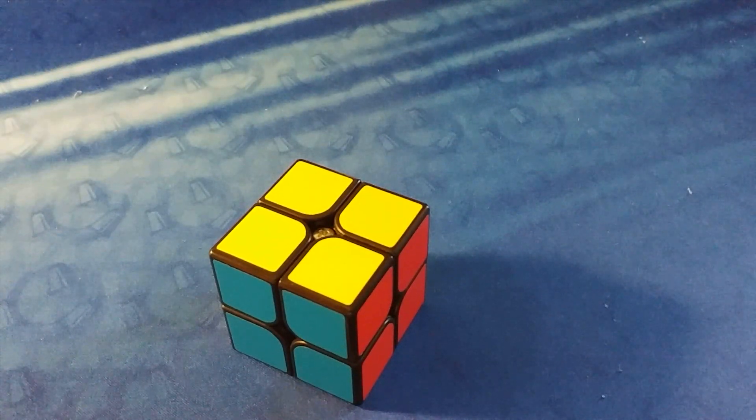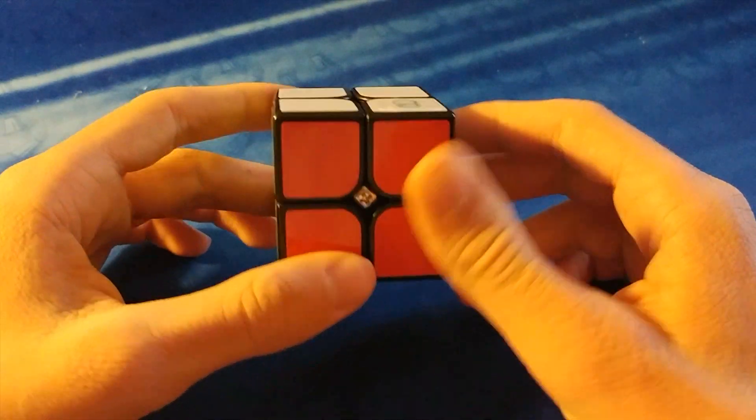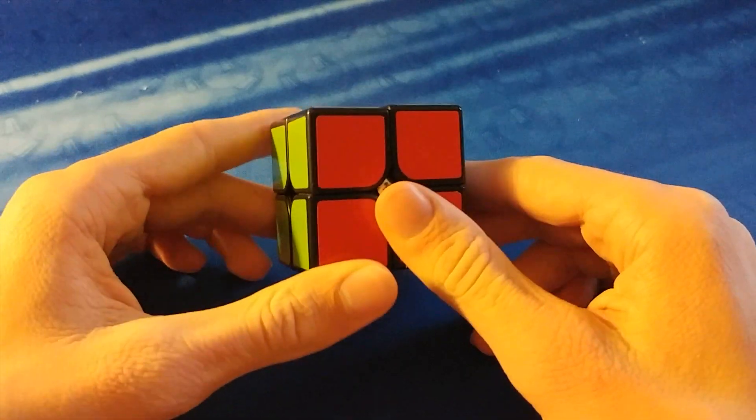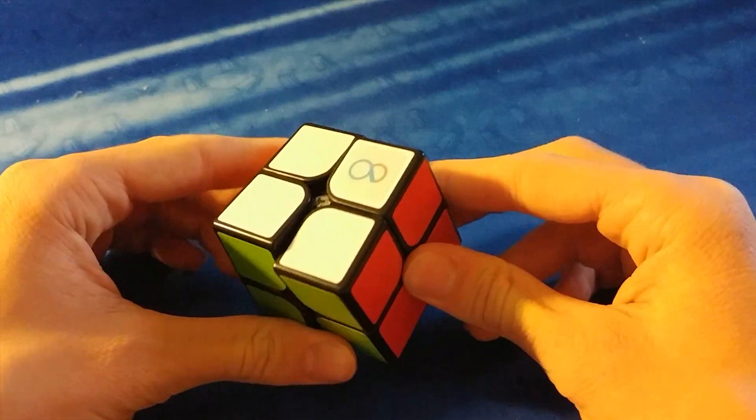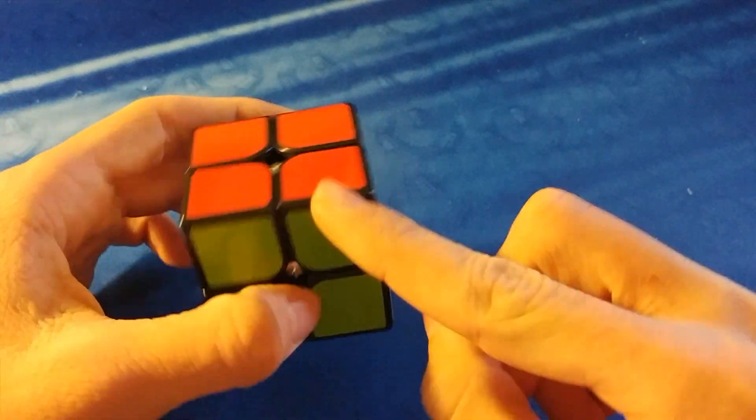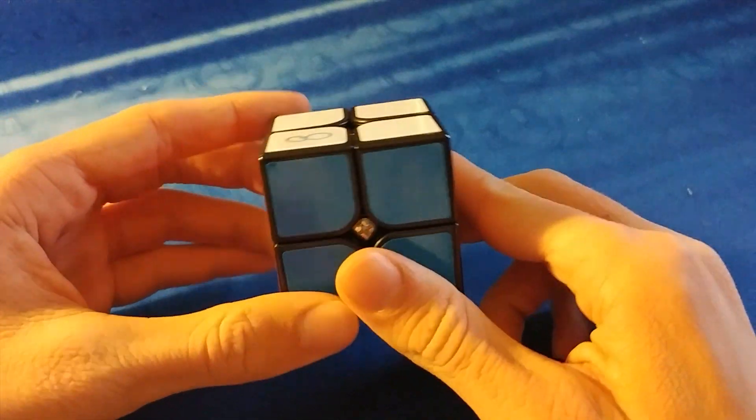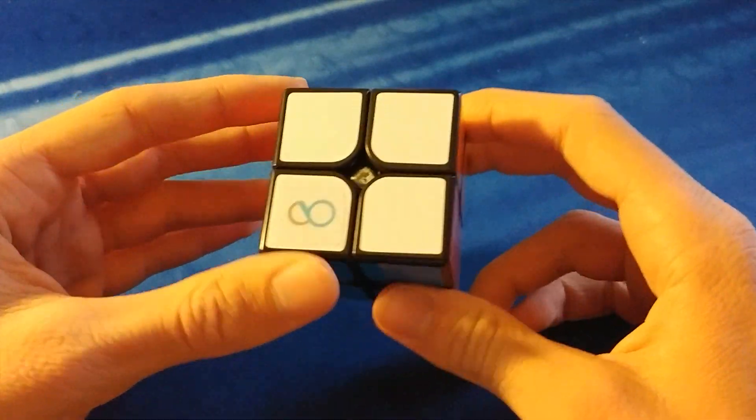Okay, so now that you know how to do the Ortega method, I want to give you some tips and tricks on how to get faster. So one thing is you need to be color neutral, which means I can start by solving this out on green, red, blue, orange, yellow, or white, so I have a larger range of options.